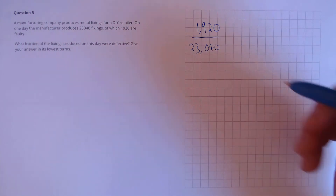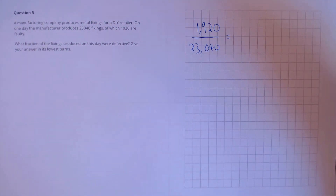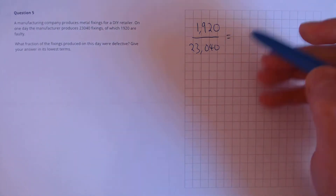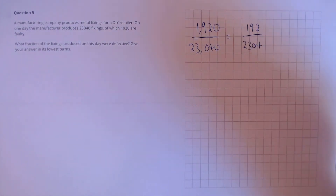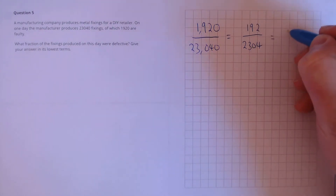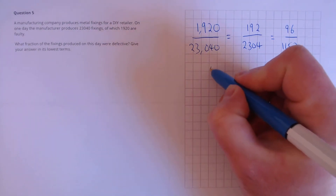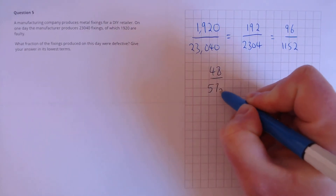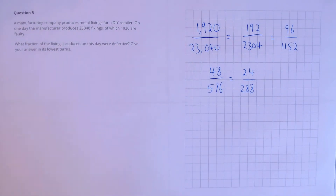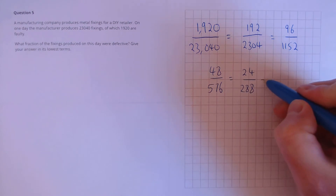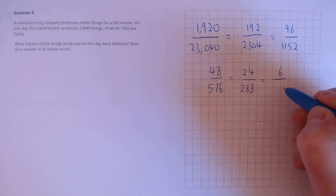We need to give this answer in its lowest terms, so we need to start dividing both parts of the fraction by the same number to cancel it down. Both divide by 10, so dividing top and bottom by 10. Then dividing both by 2 to get 96 over 1,152. Again to get 48 over 576. And again to get 24 over 288. Both actually divide by 4, so 24 divided by 4 is 6, and 288 divided by 4 is 72.